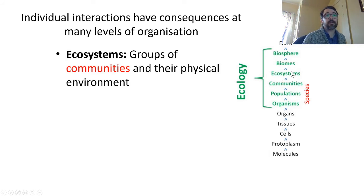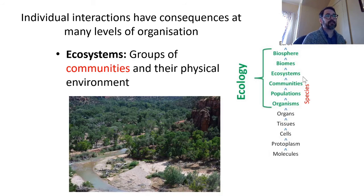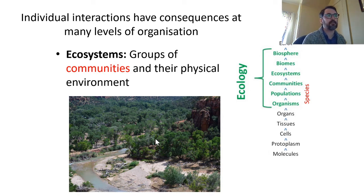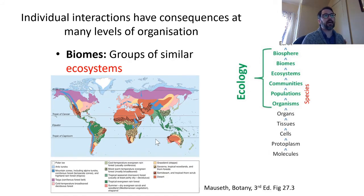Moving up from communities, we get to ecosystems — and you should detect a pattern: each level is essentially a set of the previous one. Ecosystems are groups of communities plus their physical environment. What makes an ecosystem different from a community is that it includes the physical environment: the river, atmosphere, rocks, and soil. Ecosystem scientists track biogeochemical interactions among everything out there.